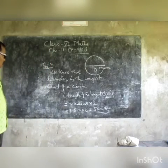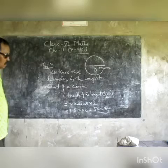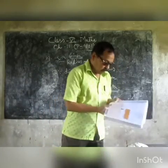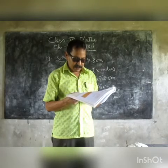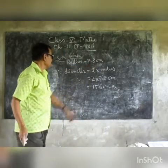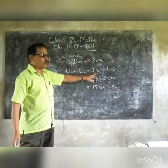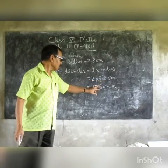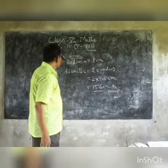In a circle, the diameter is the longest chord. Multiply the radius by 2 to get the diameter. Question number 4: Find the diameter of a circle whose radius is 7.8 cm. Given radius is 7.8 cm. Diameter equals 2 into radius, which is 2 multiplied by 7.8 equals 15.6 cm. That is the answer. Very easy.